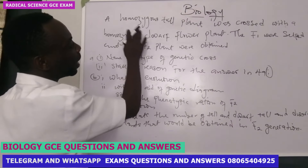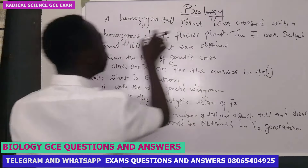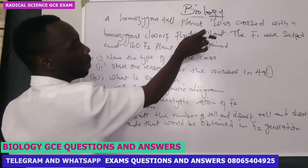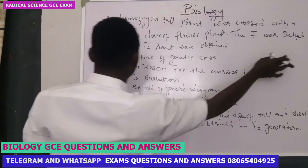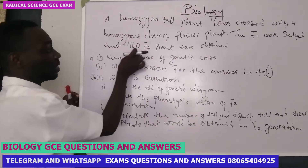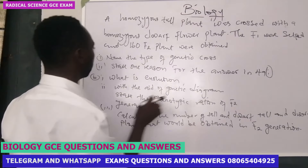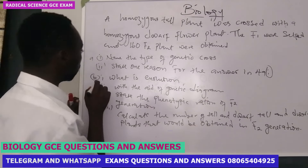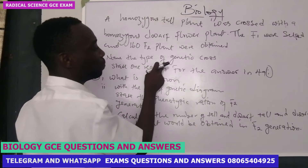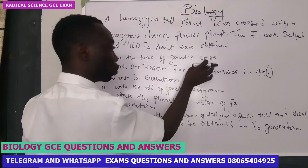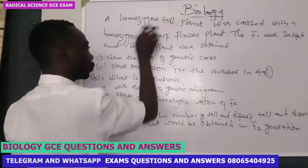A homozygous tall plant was crossed with a homozygous dwarf flower plant. The F1 were selfed and 160 F2 plants were obtained. The first question, part A number one, says: name the type of genetic cross.